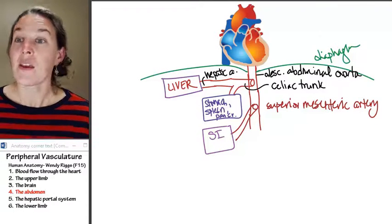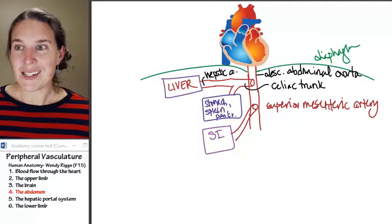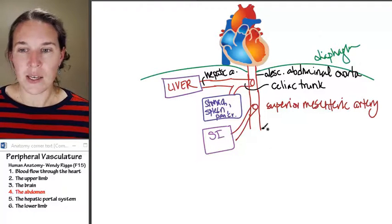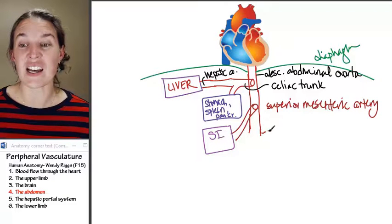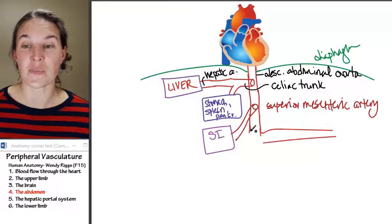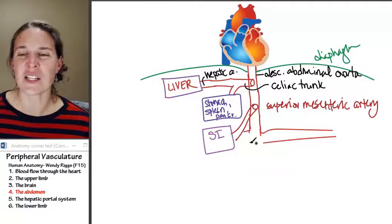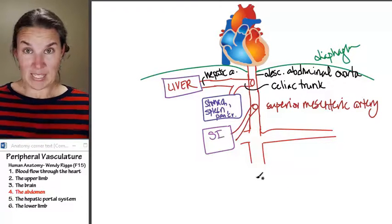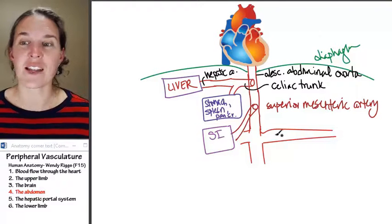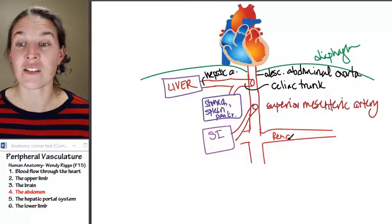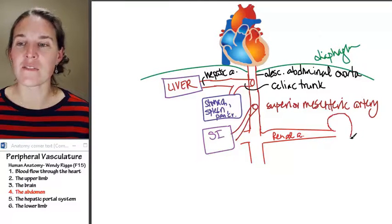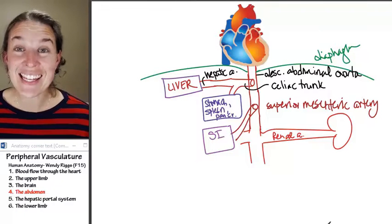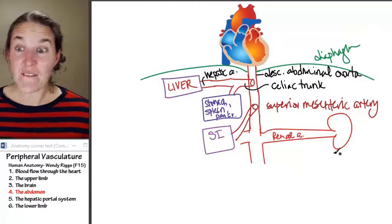We keep on descending with our descending abdominal aorta, and just beneath this superior mesenteric artery, we get a sort of giant branch. I'm going to draw it on both sides, even though I'm not going to extend it on one of the sides. But it's on both sides because guess who this guy feeds? This is the renal artery. Yeah, it feeds your kidneys.